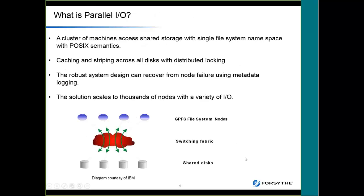I'm going to start with a quick definition of what we mean by parallel I/O, because GPFS stands for the General Parallel File System. Parallel I/O is the ability for a whole bunch of systems to access a shared set of storage as if it's a single file system namespace, all accessing it at the same time. To get performance, we do a lot of caching and striping across the disks, which means you have to take care of locking — done with a distributed locking mechanism.